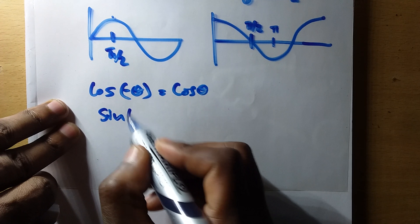Since π/6 is a special angle, cos(π/6) = √3/2 and sin(π/6) = 1/2. So c₀ = 2·(√3/2 - i·1/2). The 2 cancels with the denominators, giving c₀ = √3 - i.